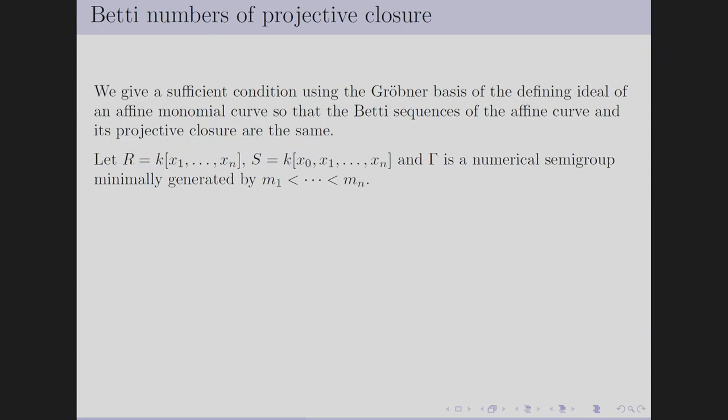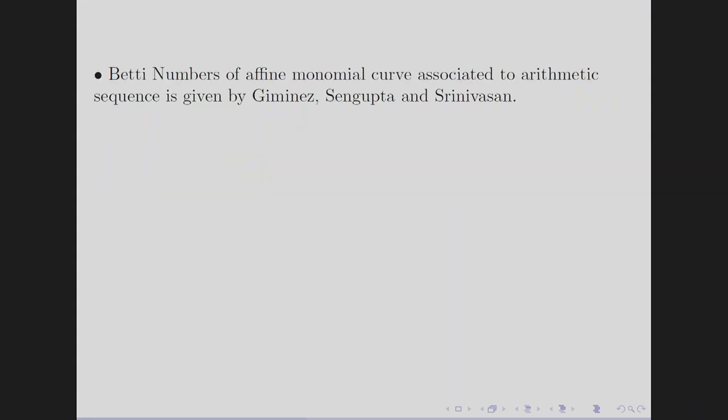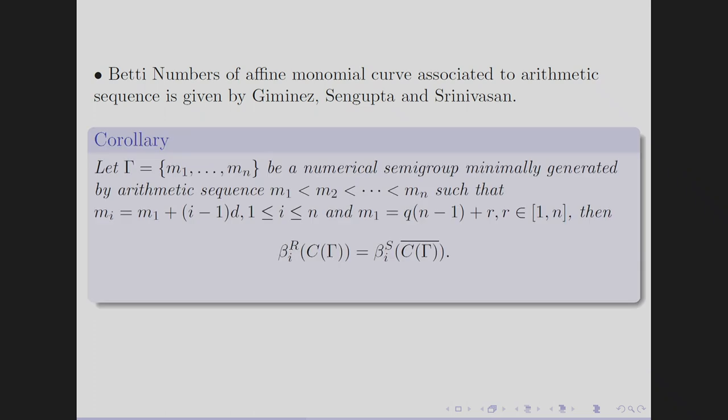Next, we study how Betti numbers behave for projective closures. Using Gröbner basis techniques, we prove that if Γ is a numerical semigroup such that its projective closure is arithmetically Cohen-Macaulay, and if there exists a minimal Gröbner basis of the defining ideal with respect to some monomial ordering such that the last variable belongs to the support of all non-homogeneous elements, then the Betti numbers of the affine monomial curve and of its projective closure are the same. From this, since the Betti numbers of the affine monomial curve associated to an arithmetic sequence were given by Gimenez, Sengupta, and Srinivasan, our theorem implies that the Betti numbers for the projective closure associated to an arithmetic sequence are also the same as those of the affine monomial curves.